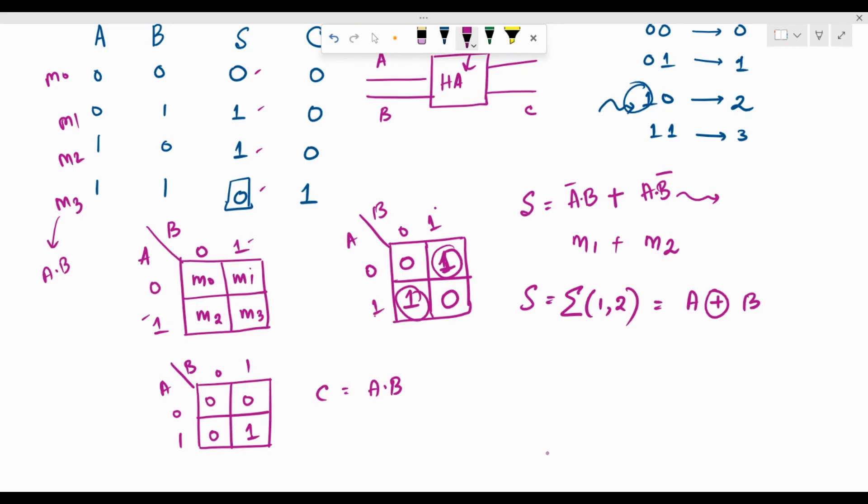So, now, we can actually fill in the black box that we drew over here. So, we have the two inputs A, B and we see that the sum is going to be A XOR B. So, let's draw the XOR gate over here.